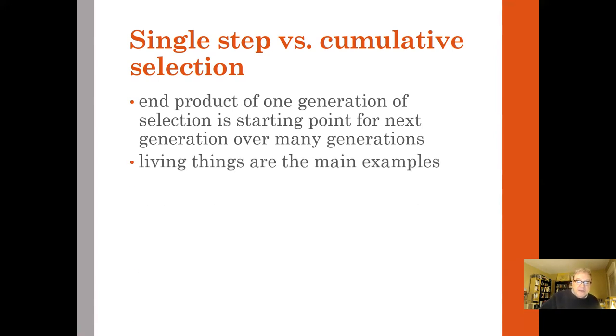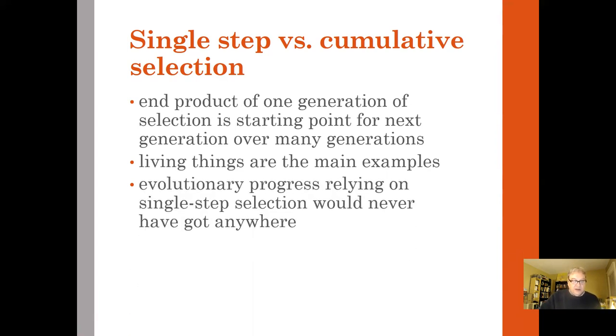Living things are the main examples we know of that participate in cumulative selection. He says if evolutionary progress had to rely on single step selection, it would never have got anywhere.